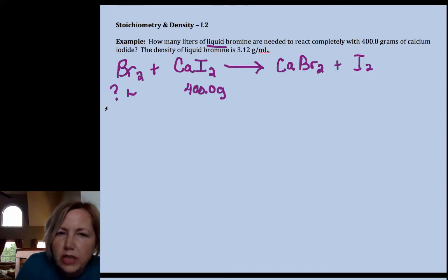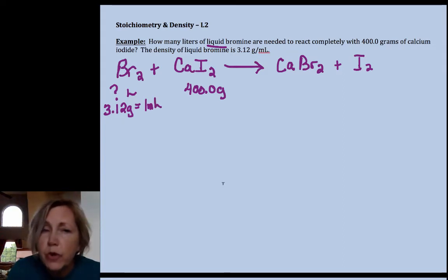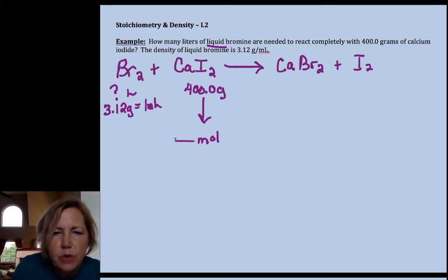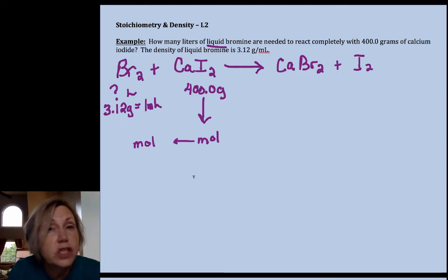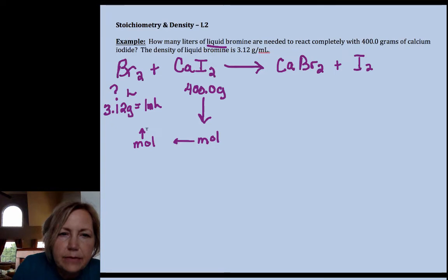What you might want to do under here is I like to write my density as an equality right in my map. So that might be my clue, that's information about bromine that might help me avoid using that molar volume. So I need to go mass to moles, then moles to moles, and now it's going to take a few steps. We don't have a conversion factor that gets us directly to volume. So we first have to go to grams and then we're going to go to milliliters and then to liters.